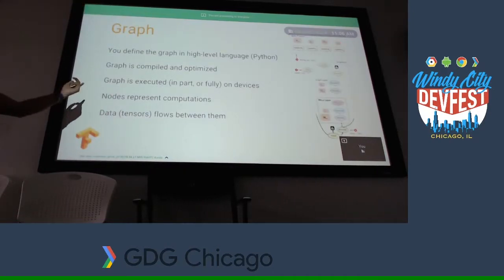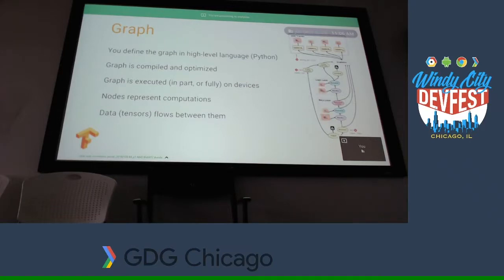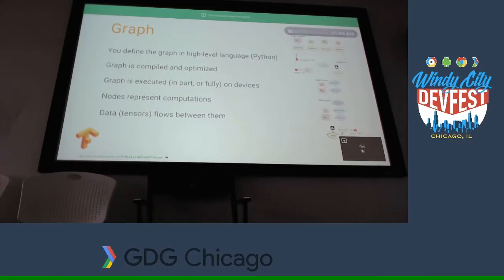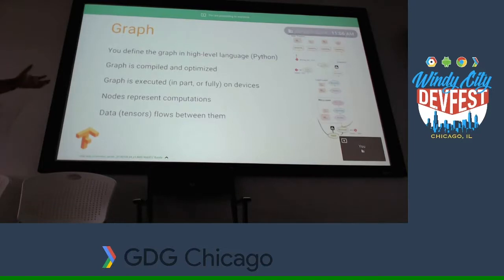Graph can be executed in parts or fully. When I show the example today, it will run fully on my machine, but you can run it in parts. People run this in conjunction with their machine, cloud servers, Raspberry Pis, and other office machines — all together as a cluster. You can use not only cloud and your own machine, but also very small devices like Raspberry Pis and Android phones.